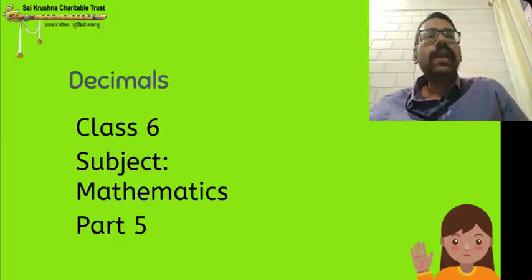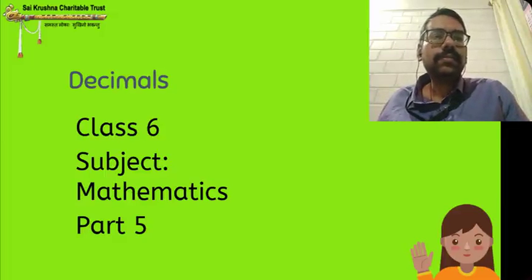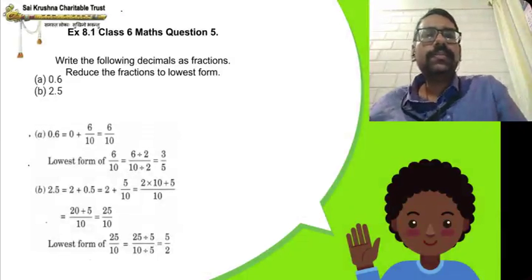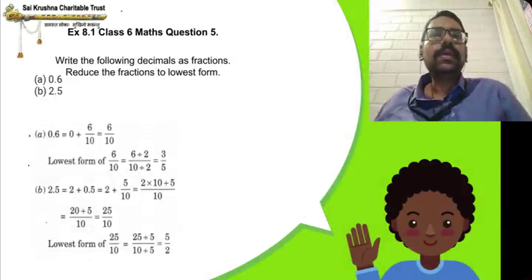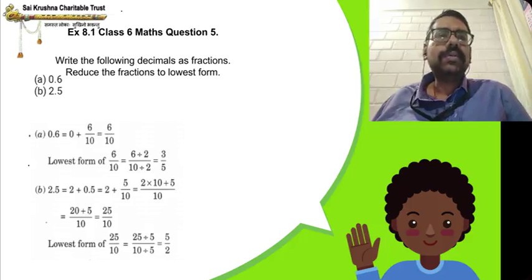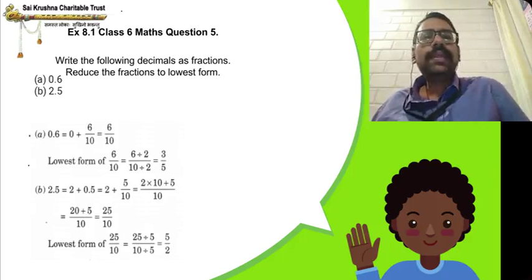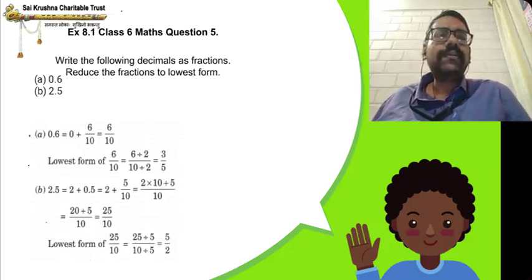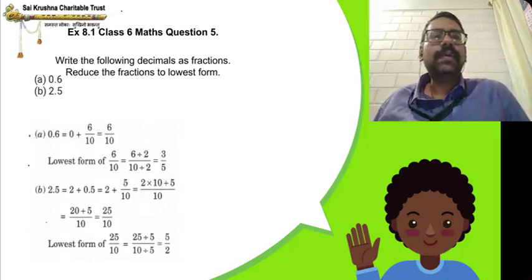Okay children, which topic we will do today? Decimals, Part 5. So we will do exercise questions now. Exercise 8.1, Classics Maths, question 5: Write the following decimals as fractions and reduce the fractions to lowest form. So what you have to do here? Make the decimal into a fraction, then reduce the fraction to lowest form. I have taught you how to reduce fractions to lowest form in the previous videos.